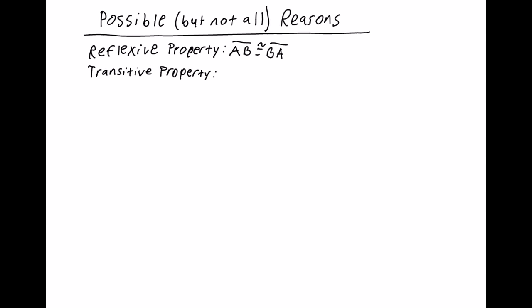Next is the transitive property. If angle one is congruent to angle two, and angle two is congruent to angle three, then angle one is congruent to angle three. Transitive property works that way, where you can just plug things in. Notice this is an if-then statement — many properties and theorems work that way, where they're conditional statements.